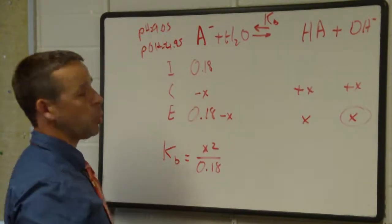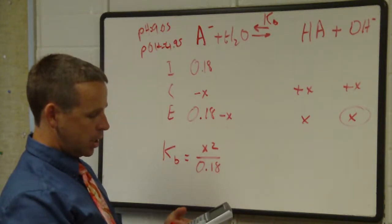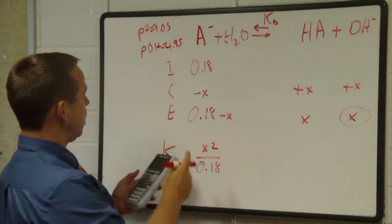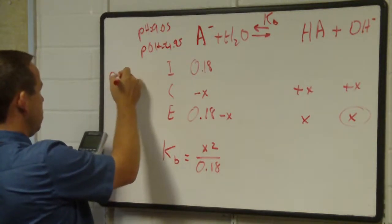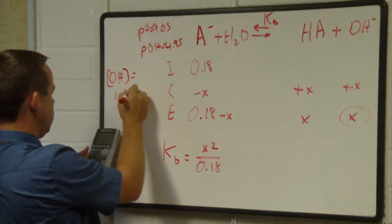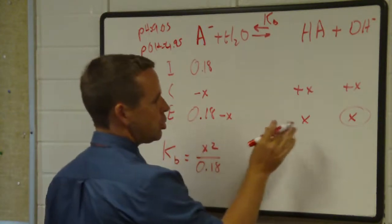From the pH we should be able to determine what the pOH is and from that we should be able to determine what the OH ion concentration. I'm going to try to find the pOH here: 14 minus 9.05, that's 4.95. So pOH is equal to 4.95.